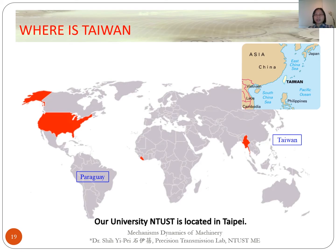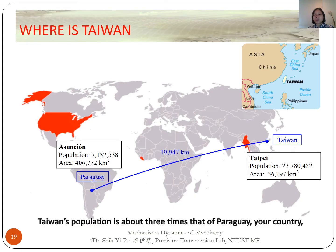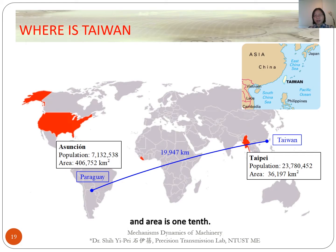Our university, NTUST, is located in Taipei. Taiwan's population is about three times that of Paraguay, and the area is one tenth. So you can see Taiwan is quite crowded, especially in Taipei.